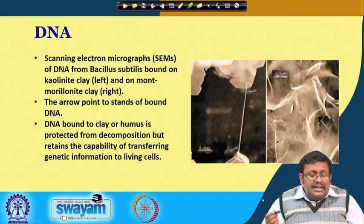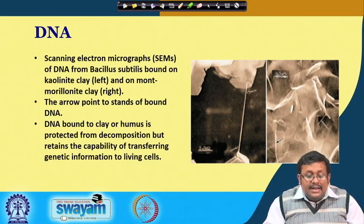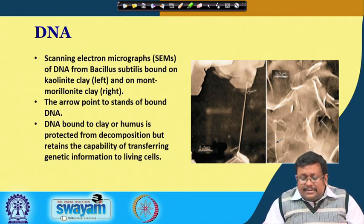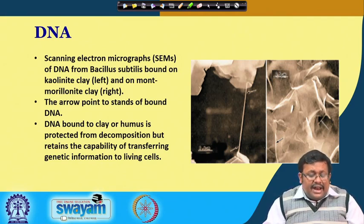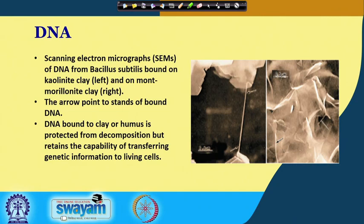Another example is DNA sorption. A scanning electron micrograph (SEM) shows DNA from Bacillus subtilis bound on kaolinite clay (left image) and montmorillonite clay (right image). Arrows indicate the strands of bound DNA. DNA bound to clay or humus is protected from decomposition but retains the capability of transferring genetic information to living soil organisms — an important implication of DNA sorption in the soil.